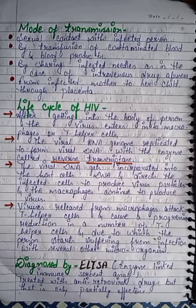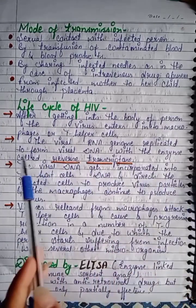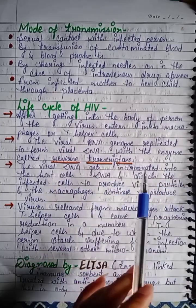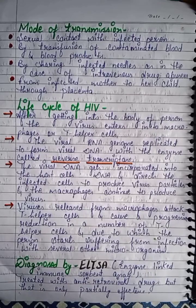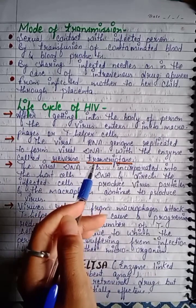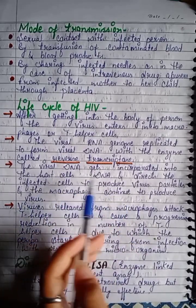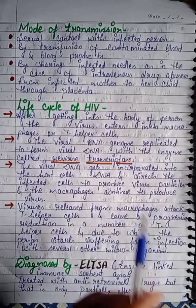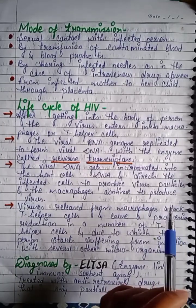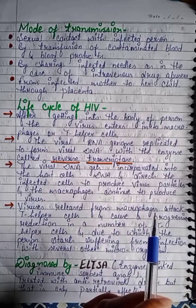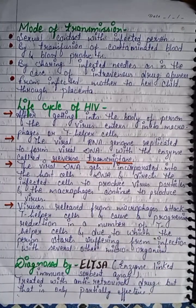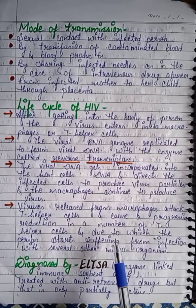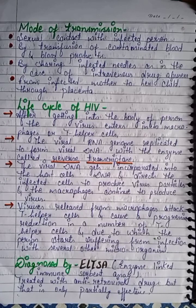In the HIV life cycle, after entering the body, the virus enters macrophages and T helper cells. The viral RNA genome replicates to form viral DNA using the enzyme reverse transcriptase. The viral DNA gets incorporated into the host cell DNA, and directs the infected cell to produce virus particles. Macrophages continue to produce virus and directly attack T helper cells.